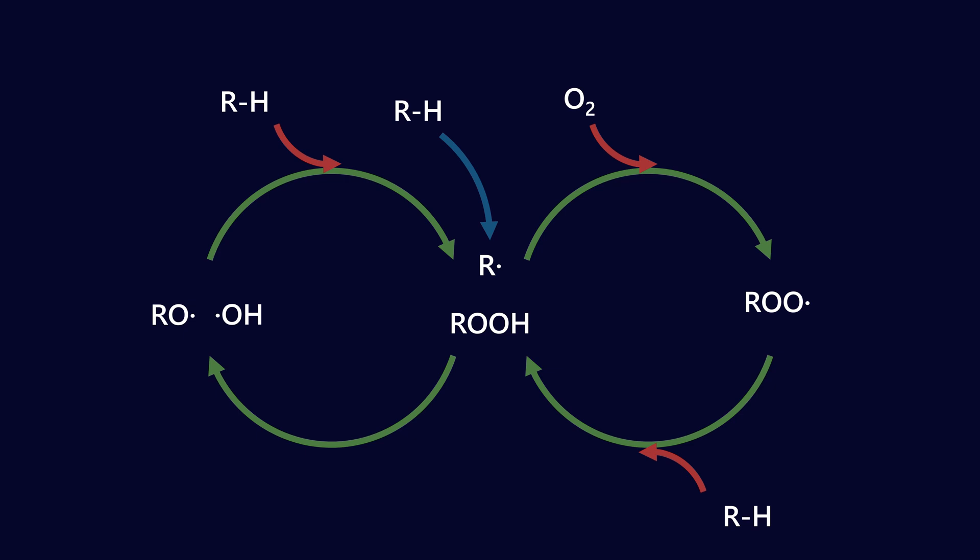Now we can interrupt this cycle in a number of ways. For example, this RH group — remember R stands for any kind of polymer — we can prevent that from converting into a free radical by eliminating sources of UV light, by eliminating metals (so that's where metal deactivators come in), eliminating exposure to oxygen, and reducing the temperature of the system, which reduces the number of radicals in the system and cuts off that first pathway.